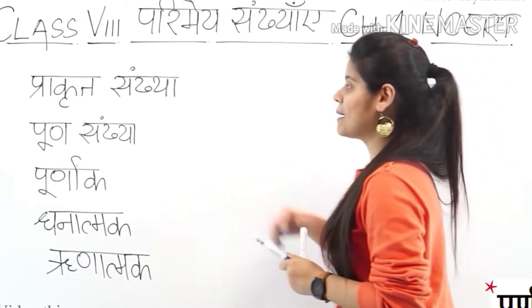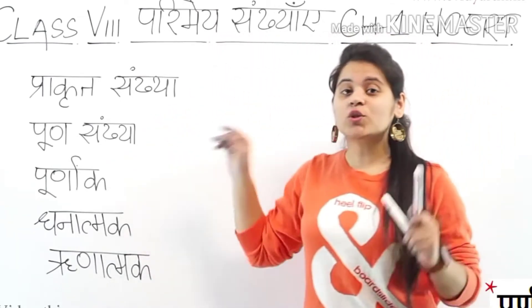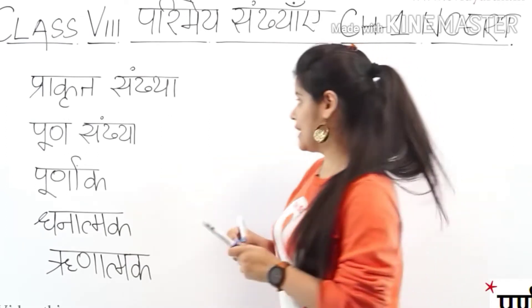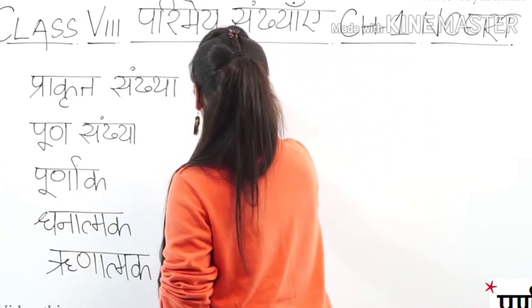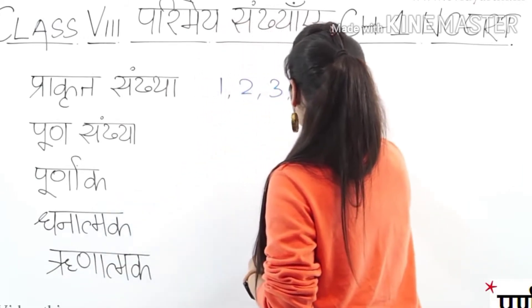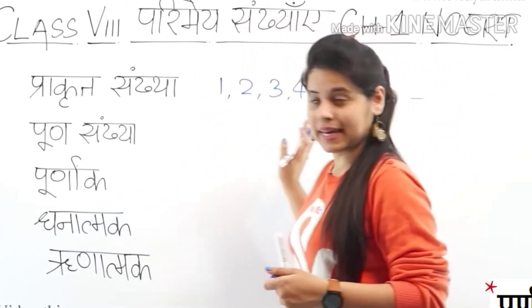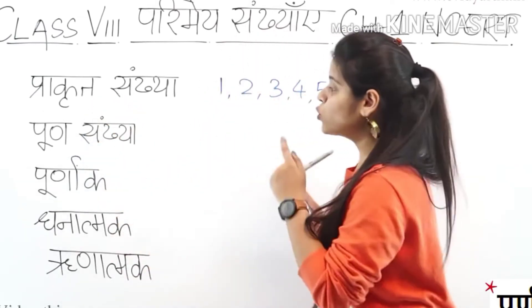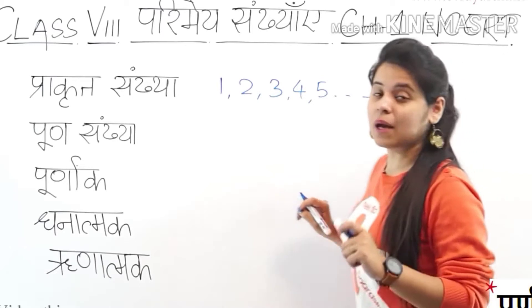First, we have Prakat Sankhya — Natural Numbers. These are 1, 2, 3, 4, 5, and so on. All of these are Prakat Sankhya.